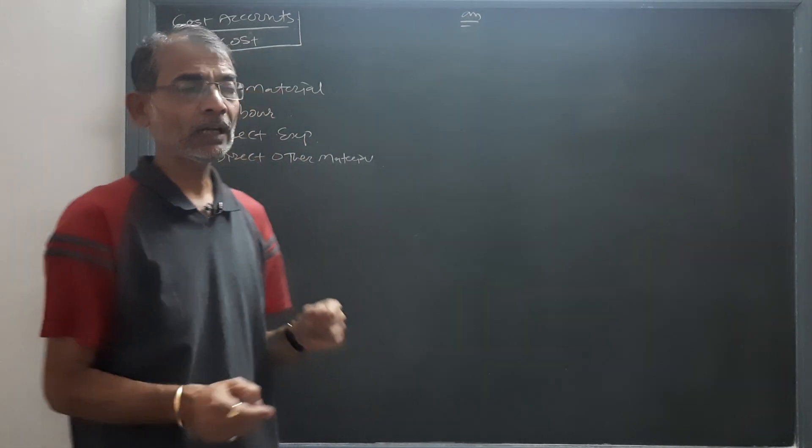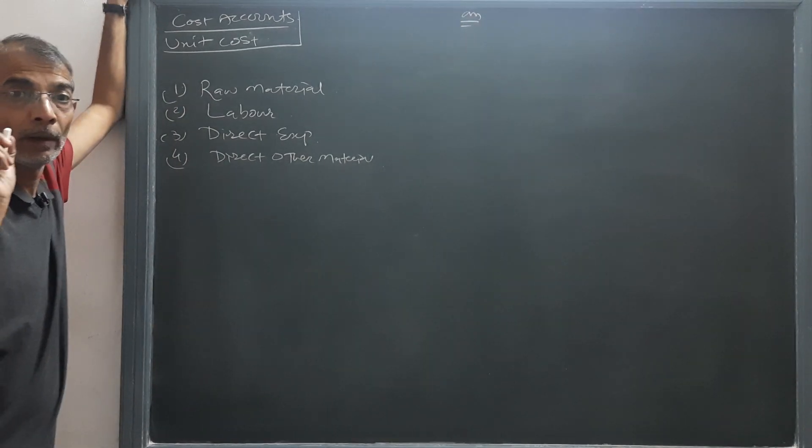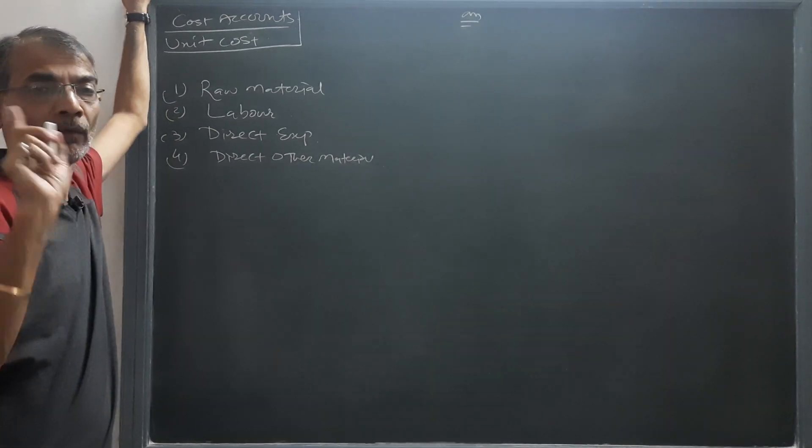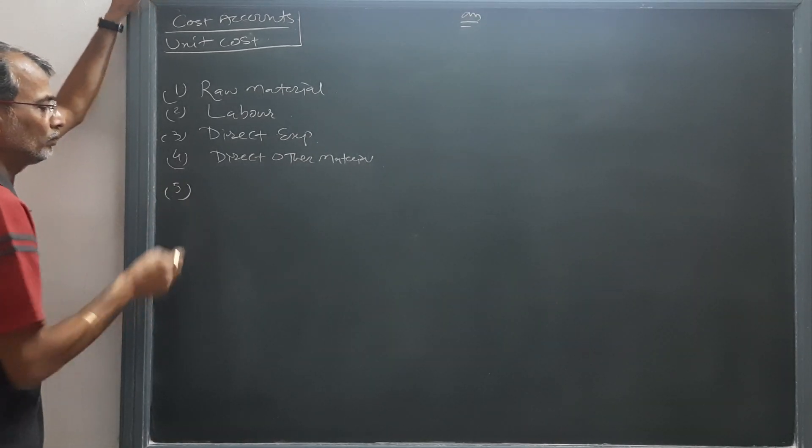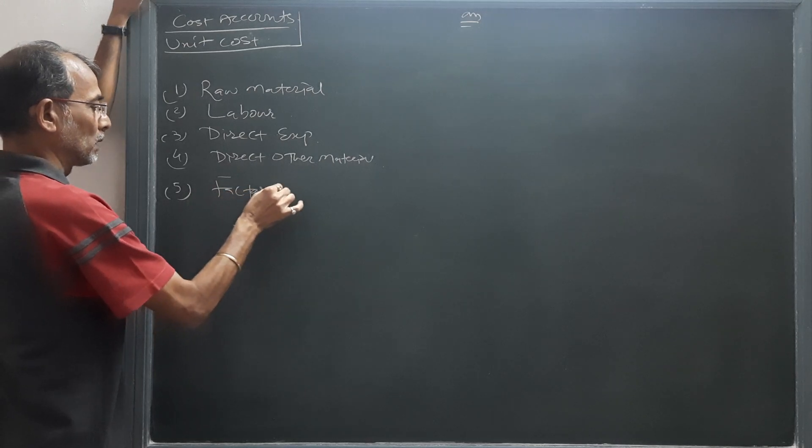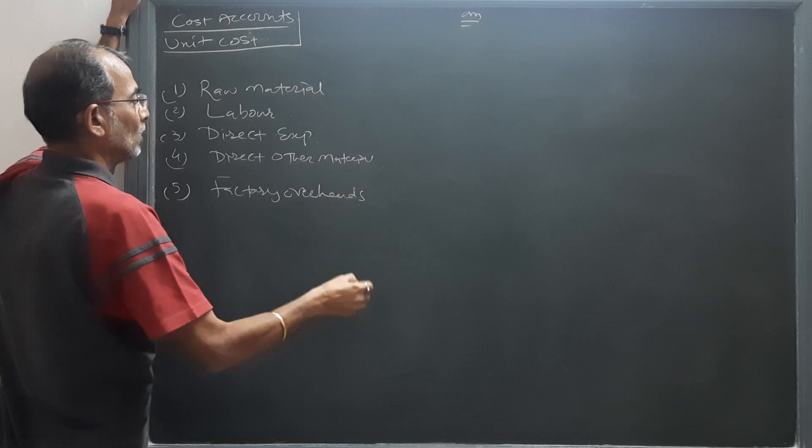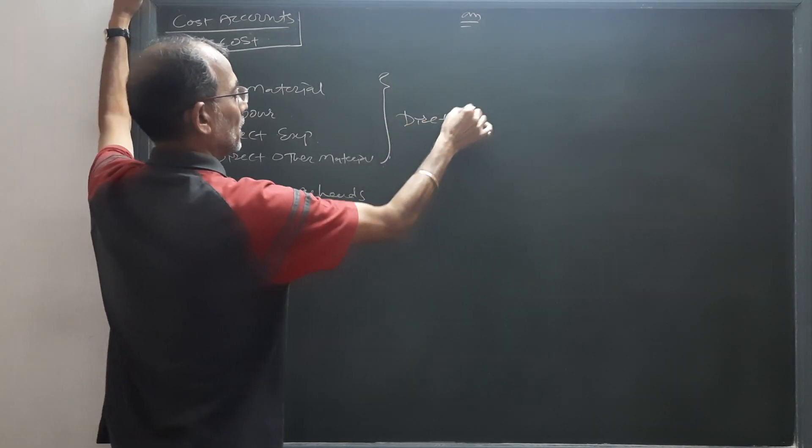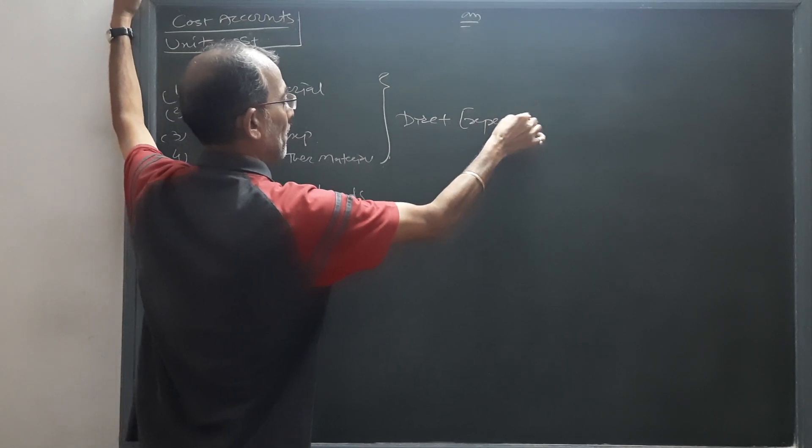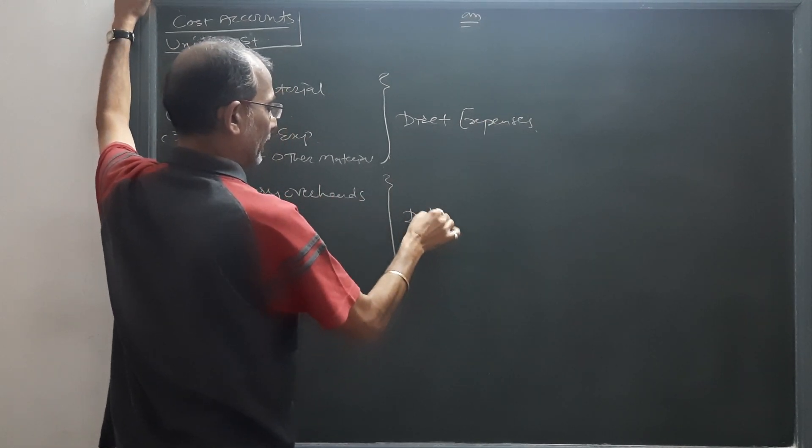Then after comes where the unit is manufactured - expenses of that unit. In that it comes factory overheads. These are direct expenses and these three are indirect expenses.